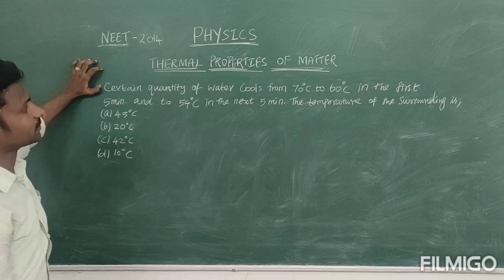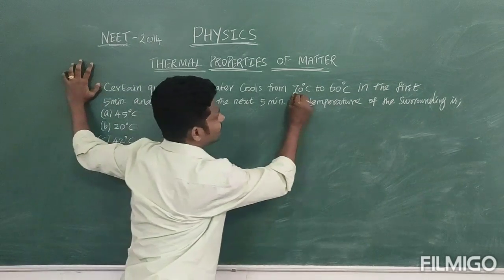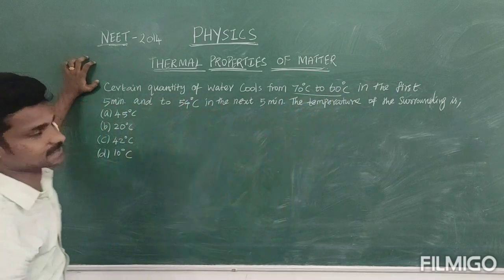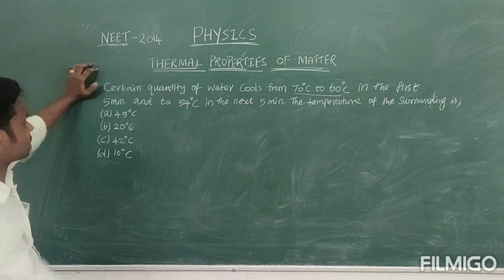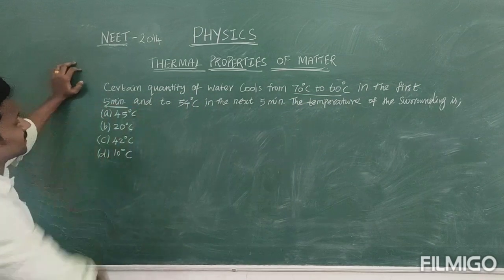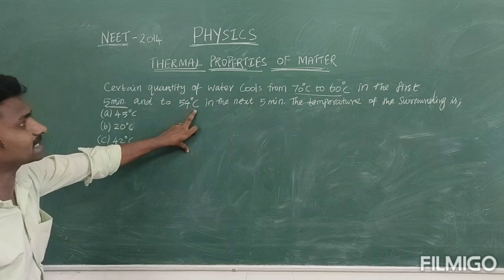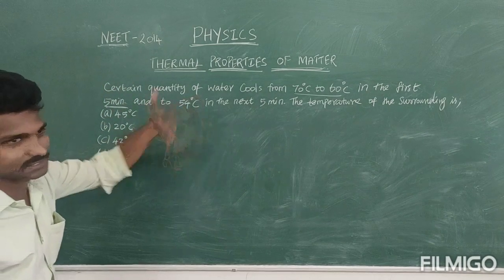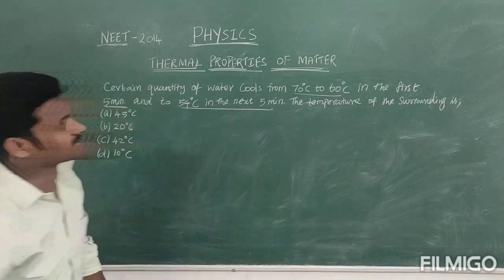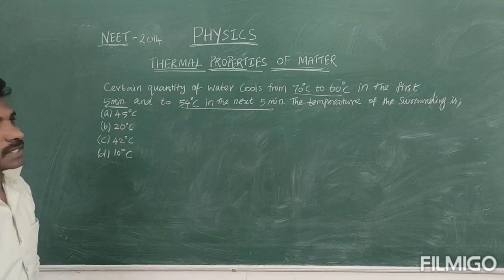A certain quantity of water cools from 70 degrees Celsius to 60 degrees Celsius in the first 5 minutes, and after that, again it cools from 60 degrees to 54 degrees Celsius in the next 5 minutes. So the surrounding temperature is to be found.